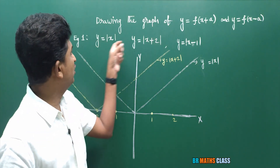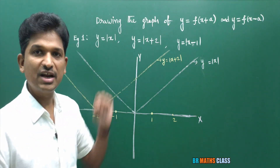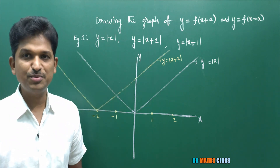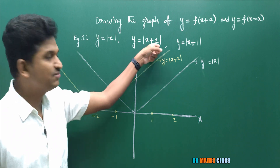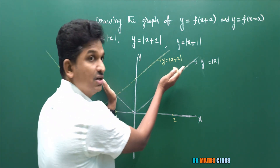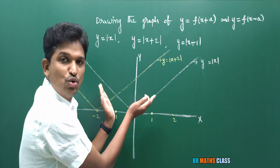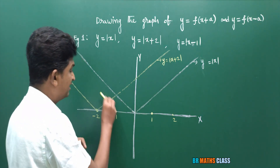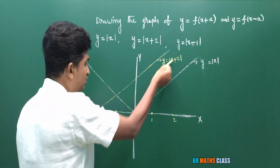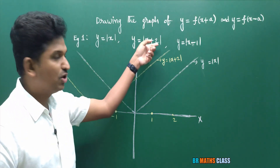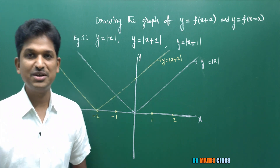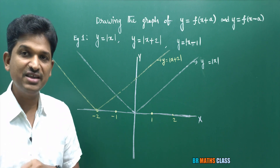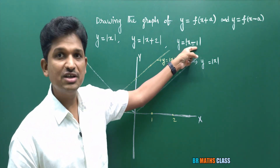So when you know the graph of mod x, you can easily draw the graph of modulus of x+2. Not only modulus of x+2, you can draw modulus of x+1 also — shift the graph symmetrically through one unit towards the left. Like that, modulus of x+3, modulus of x+100 — whatever graph you want, you can draw.